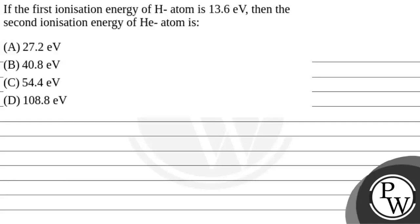Let's read the question. The question says: if the first ionization energy of hydrogen atom is 13.6 electron volt, then the second ionization energy of helium atom is what? We have to calculate what will be the second ionization energy of helium. Let's see the key concept.